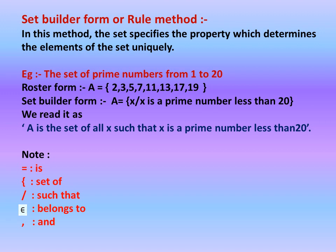See how I have written in set builder form. A = {x / x is a prime number less than 20}. You cannot read it as forward slash. We read it as: A is the set of all x such that x is a prime number less than 20. Let's take down this note.